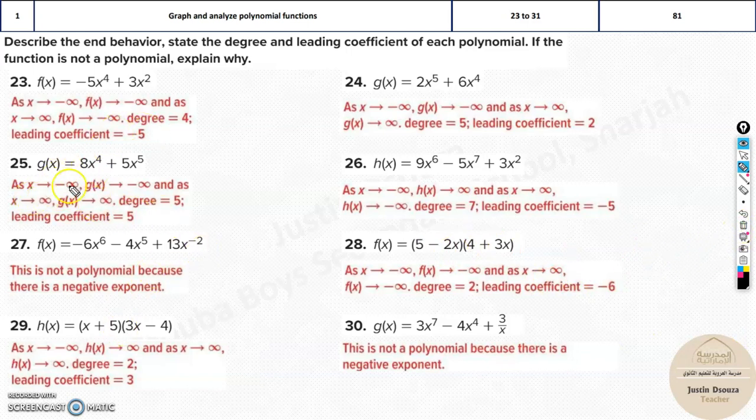So you can find the domain and everything. Now, over here, I'll just quickly go through a few of the problems, degree and leading coefficients. For example, this one. You can see the degree is power 5. That's the highest. So that is the degree. And leading coefficient is also 5.